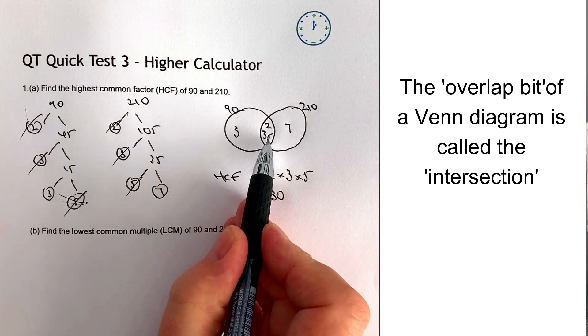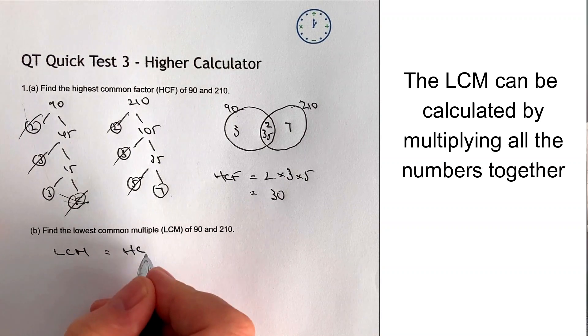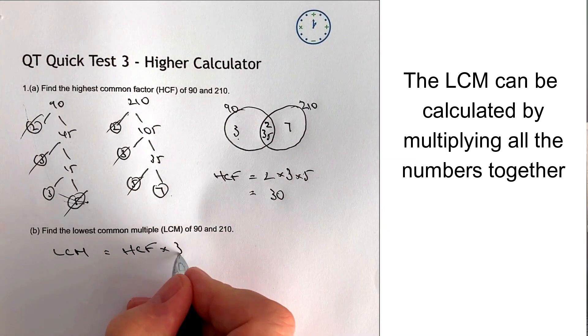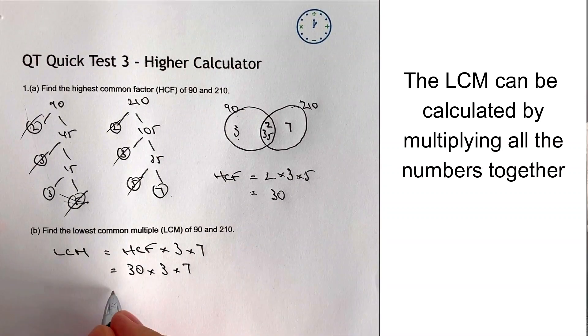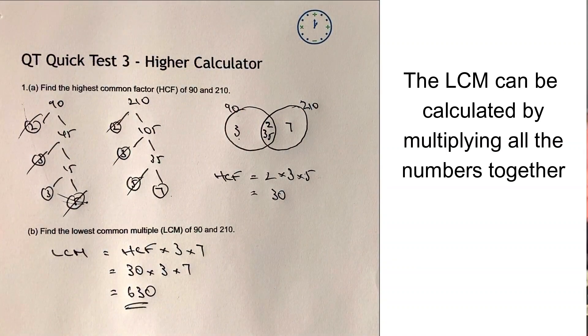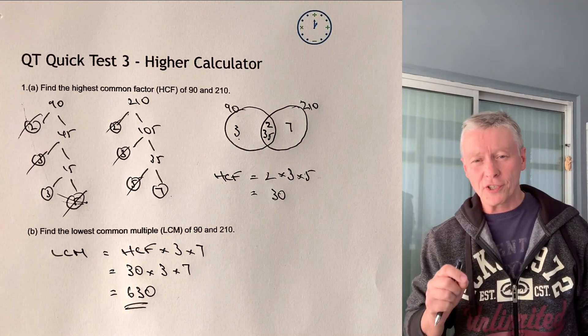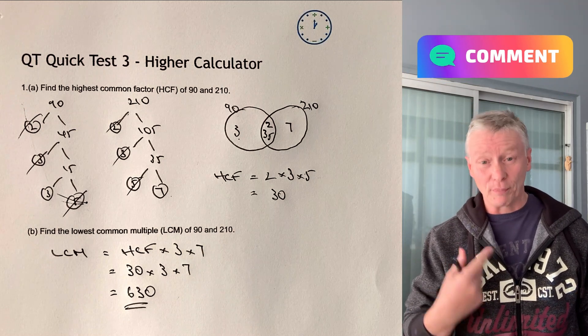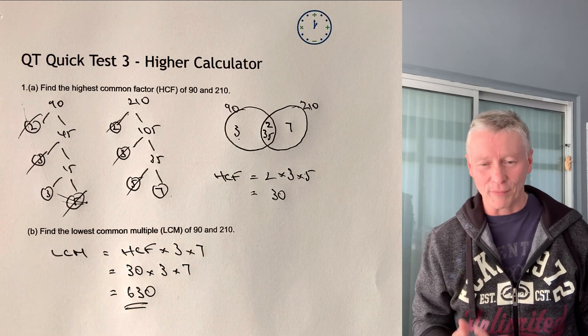If you multiply everything out within the Venn diagram, that will give you the LCM. So in this particular one, the HCF is going to be two times three times five, which is going to be a total of 30. And it's these three numbers in the middle, which also then means that the LCM is going to be equal to the HCF multiplied by what's left, which is three and seven. So we've got 30 multiplied by three multiplied by seven. And that's going to give us 630 for the LCM.